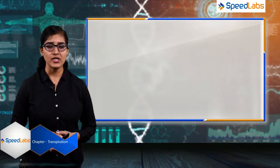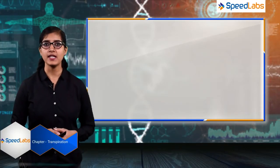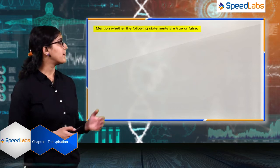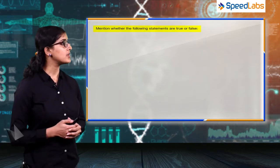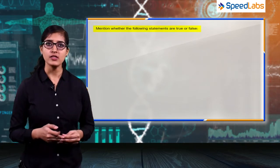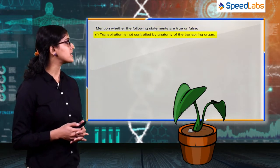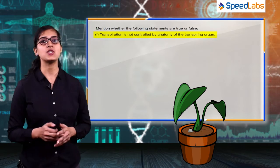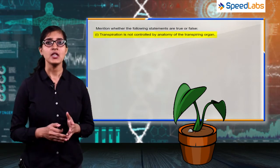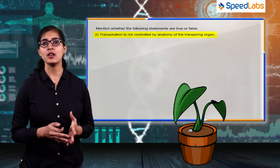The next important question from chapter transpiration is mention whether the following statements are true or false. So the first statement is transpiration is not controlled by anatomy of the transpiring organ, means they're asking if there is any relation between the anatomy of transpiring organ and rate of transpiration.